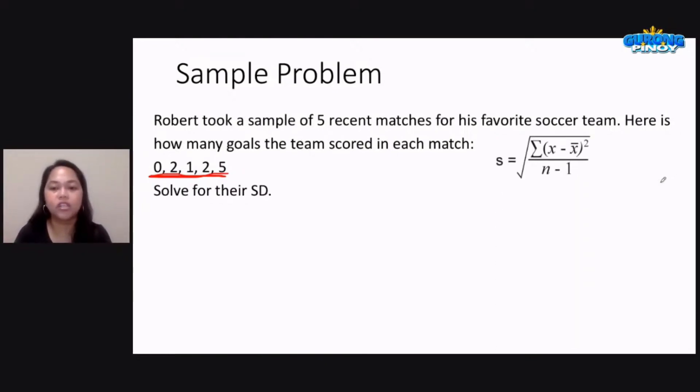So again, your formula for standard deviation is shown here. That's the square root of the summation of x, that's the score, minus the mean, the x with the bar there, that's the average or the mean, the quantity is squared, all over n, the number of scores, minus 1.